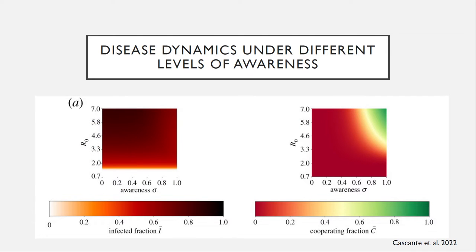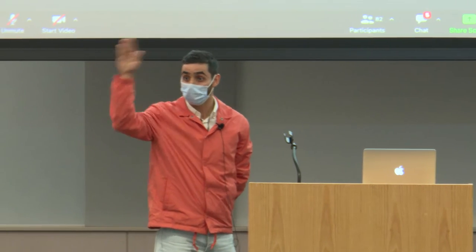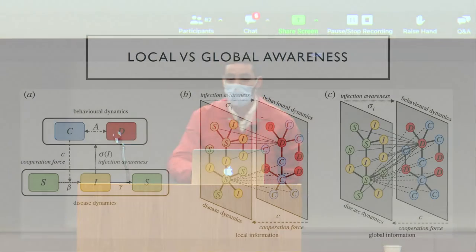We looked at how the fraction of infected people is modulated by the awareness parameter and by transmission. For low awareness values and high transmission, you have a higher fraction of infected people. The most interesting part is the behavioral dynamics: for high awareness values and high transmission values, you see the emergence of cooperation in the system. This is something you don't expect in a prisoner's dilemma — you always expect everyone to end up defecting — but when you dynamically update these matrices, cooperation emerges.